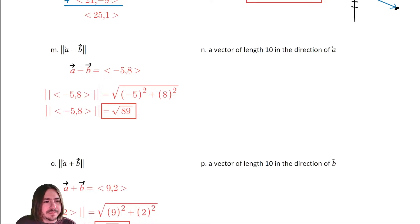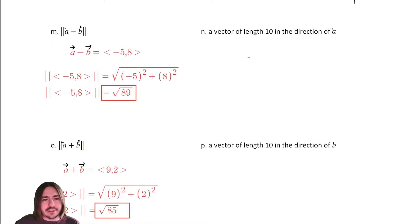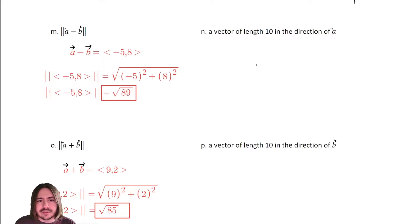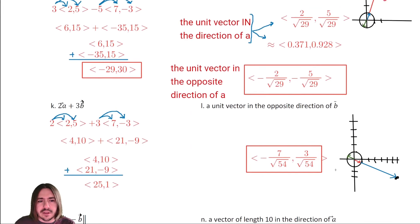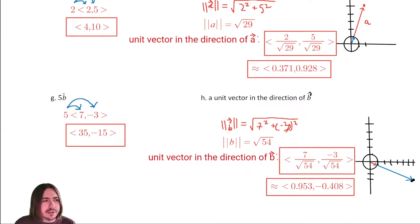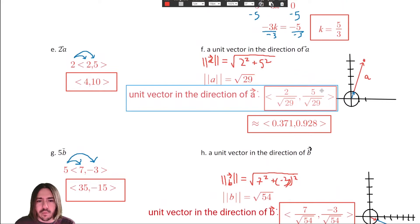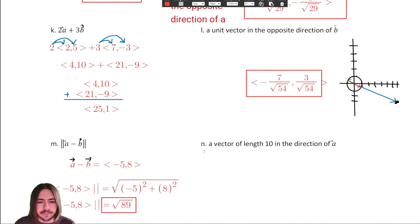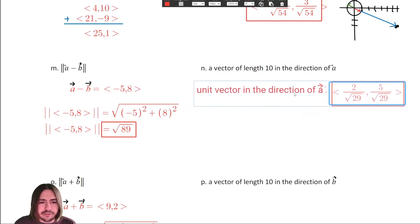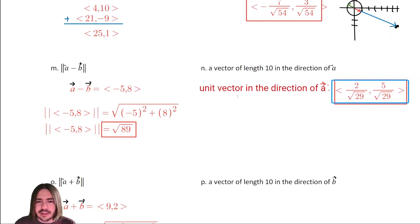Letters N and P ask for a vector of length ten in the direction of each individual vector. The strategy is to first find the unit vector in that direction, then multiply it by ten. We already found the unit vectors, so we can copy that work. For the unit vector in the direction of A, we multiply each component of the unit vector by ten.